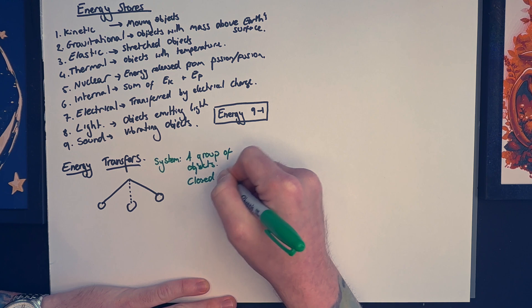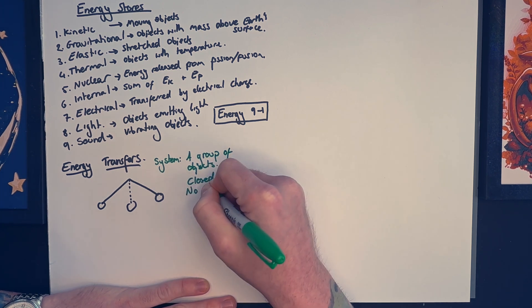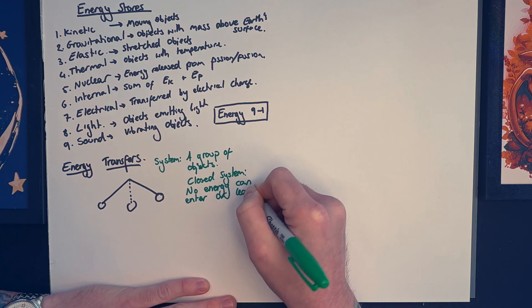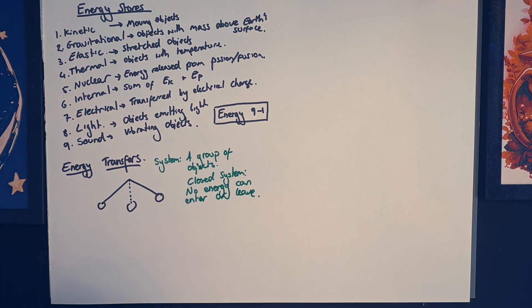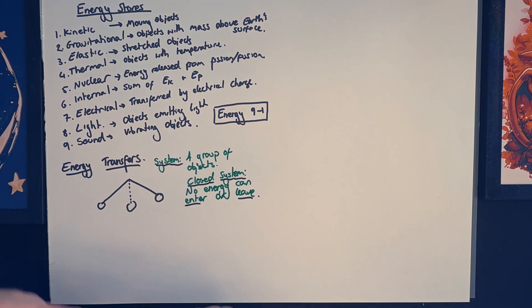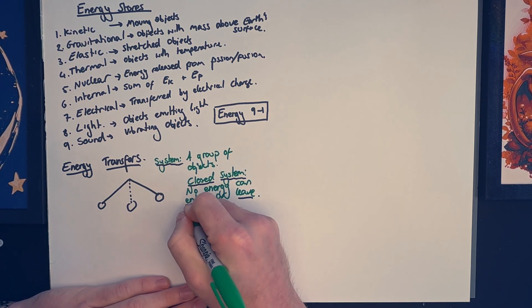A key definition in GCSE science: we need to know about closed systems. In a closed system, no energy can enter or leave. So if I trap my nephew in a box and no energy can get in or out, I can call that system a closed system. Next is an open system where energy can enter or leave.